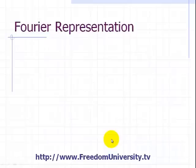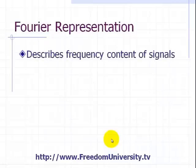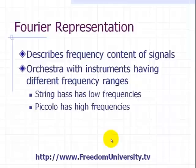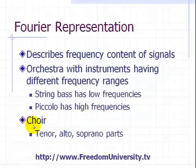Fourier representation of signals is important in communications because it describes the frequency content of signals. For example, an orchestra with instruments having different frequency ranges—the string bass has low frequencies while the piccolo has high frequencies. Also in a choir, you have different voice parts such as the tenor, alto, and soprano parts.